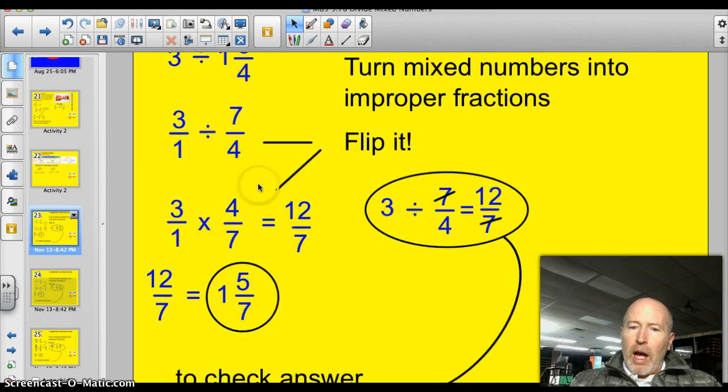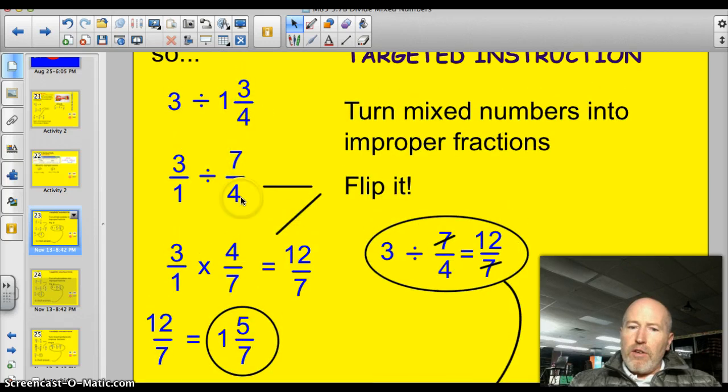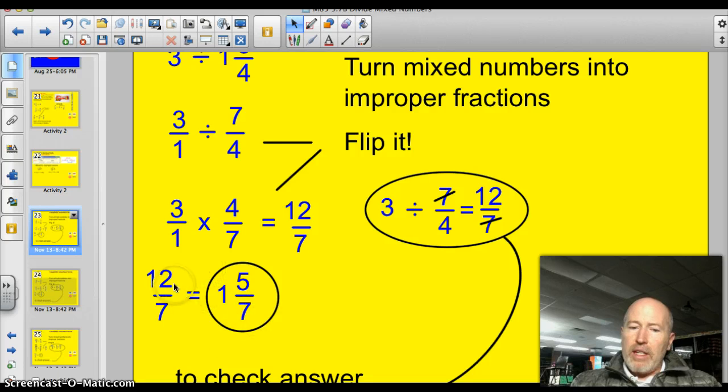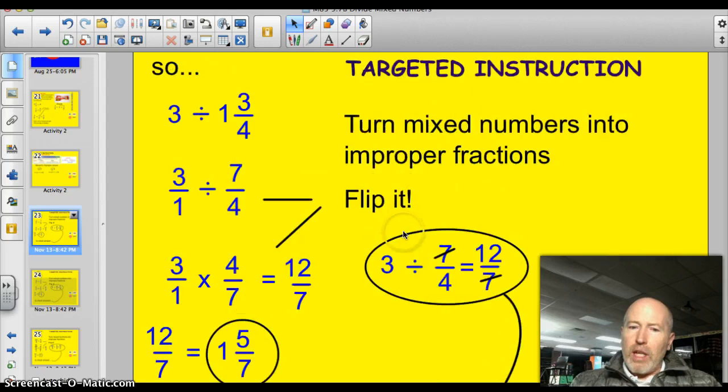Then, the second step is you just flip it. Instead of 7/4, I am going to multiply by 4/7. Here's my reciprocals right here. So, when I multiply straight across, 3 times 4, I get 12. 1 times 7 is 7. So, I have 12/7, which if you reduce that down or simplify that, taking out a whole 7/7, you would have 1 and 5/7 as a remainder.